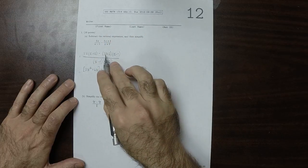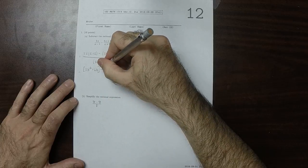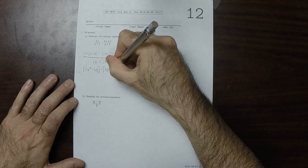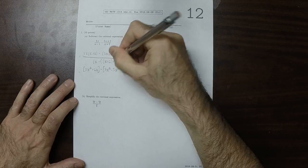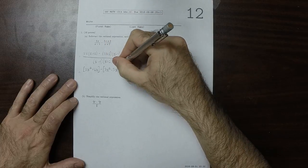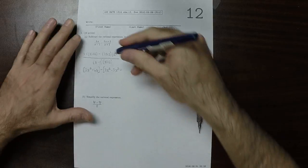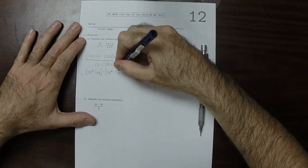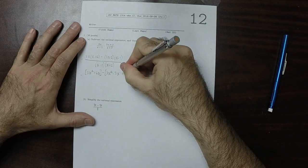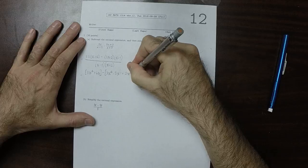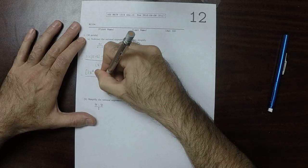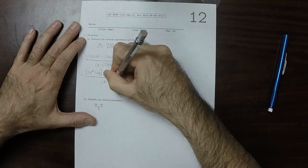So I'll FOIL this. 3x times x is 3x squared, and then minus 3x. And then minus 3x. And now plus 2 times x. So that should be 3x. So now plus 2 times x minus 2, over x minus 1 times x plus 2.